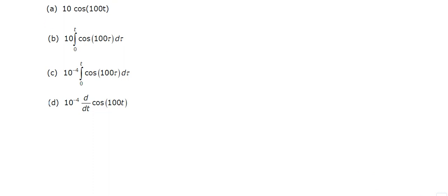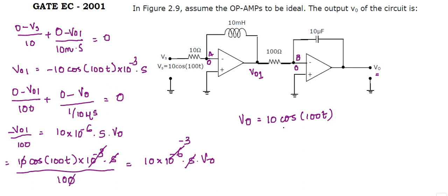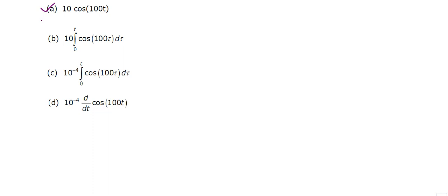Hence we got the answer as V0 equal to 10 cos of 100t. So, A is the correct option.